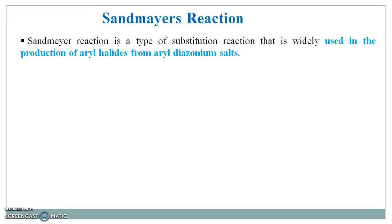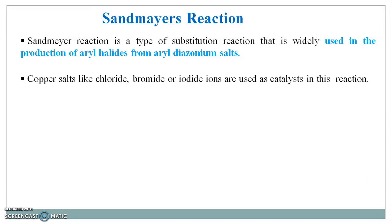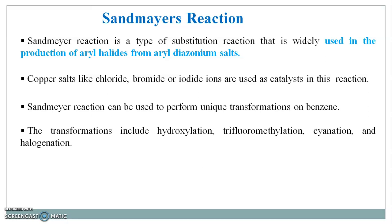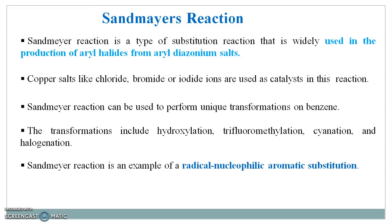Sandmeyer reaction is a type of substitution reaction that is widely used in the production of aryl halides from aryl diazonium salts. Copper salts like chloride, bromide or iodide ions are used as a catalyst in this reaction. The Sandmeyer reaction can be used to perform unique transformations on benzene. The transformations include hydroxylation, trifluoromethylation, cyanation and halogenation. The Sandmeyer reaction is an example of a radical nucleophilic aromatic substitution.